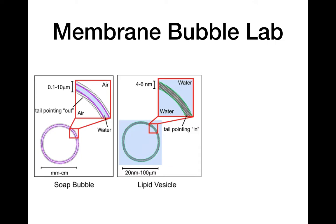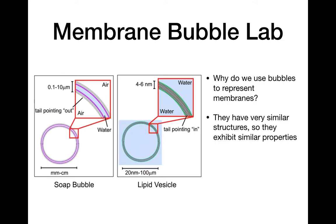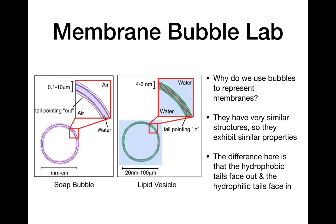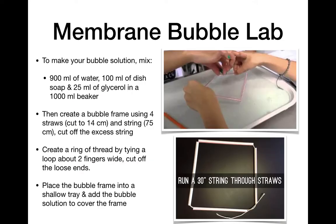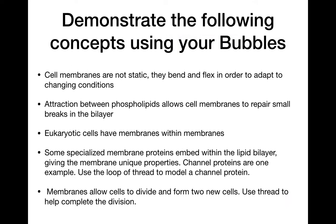The last thing here is the membrane bubble lab — the last part of the lesson. You guys already did this with the tutorial, which is great. Bubbles are helpful to represent membranes because they have very similar structures. A soap bubble has two layers of soap tails pointing out and in, with water trapped in between. The difference from a phospholipid bilayer is the tails facing in versus facing out, because in a soap bubble there's a little bit of water trapped between the layers, while in a cell water is in the environment outside. You made bubble solution and a bubble frame, and these concepts demonstrate how membranes function and why their structure needs to be that way to perform those functions.